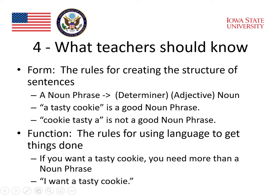The distinction between form and function is also very important. Form refers to the rules for creating the structure of sentences. For example, a noun phrase is created by putting together a determiner, an adjective, and a noun — though the determiner and adjective are actually optional, so you can have a noun phrase with just a noun. A phrase like 'a tasty cookie' is a good noun phrase with all of those parts in order, whereas 'cookie tasty a' is not a good noun phrase according to those rules of form.